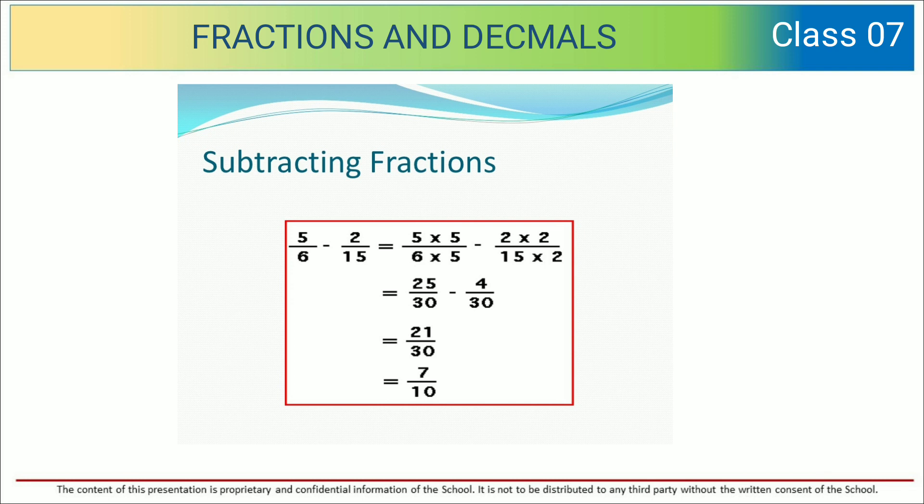...with 5, so you get the denominator as 30. After doing that, you can calculate very easily: 25 upon 30 minus 4 upon 30. You can take 30 common. 25 minus 4 is 21.